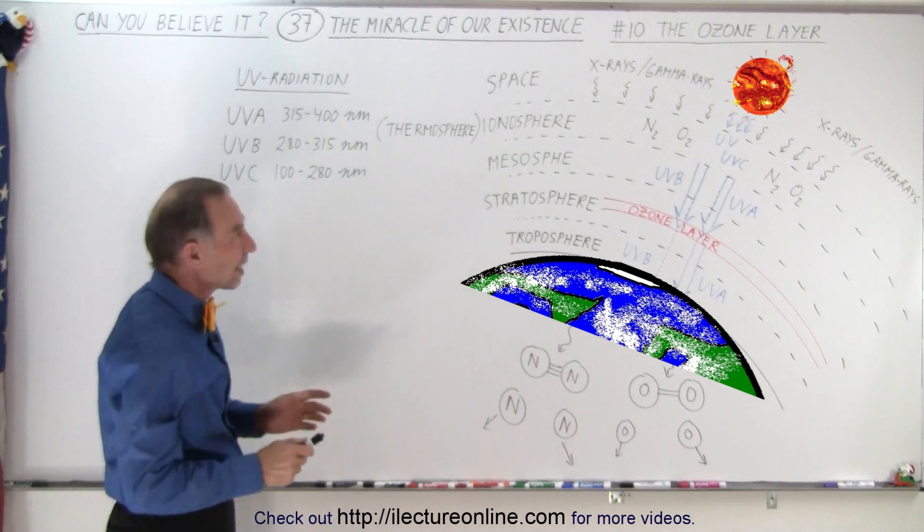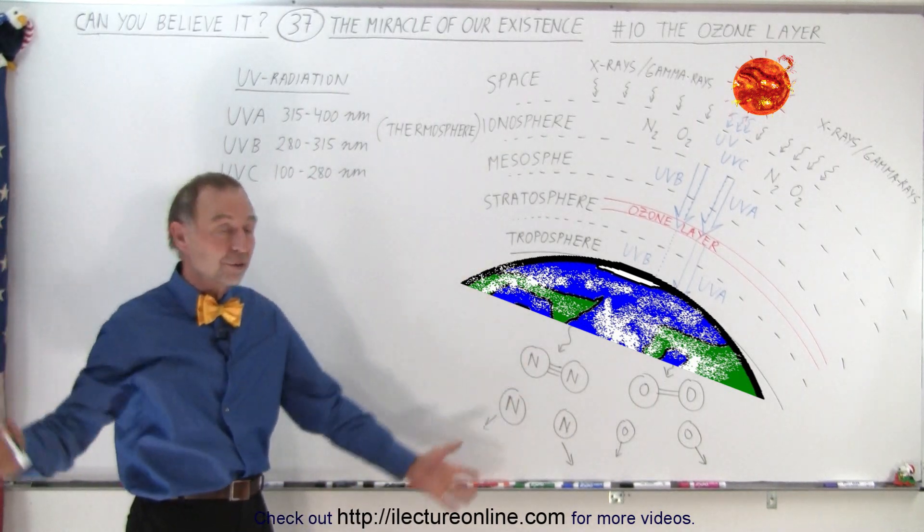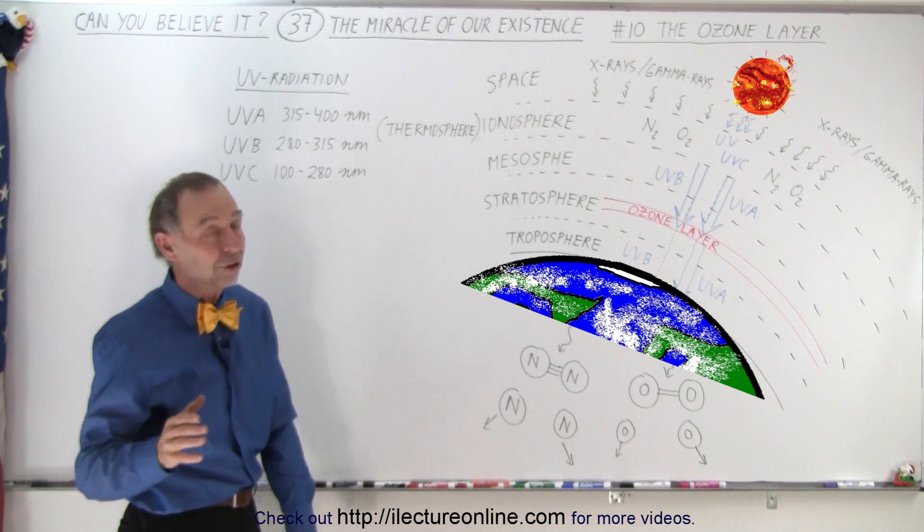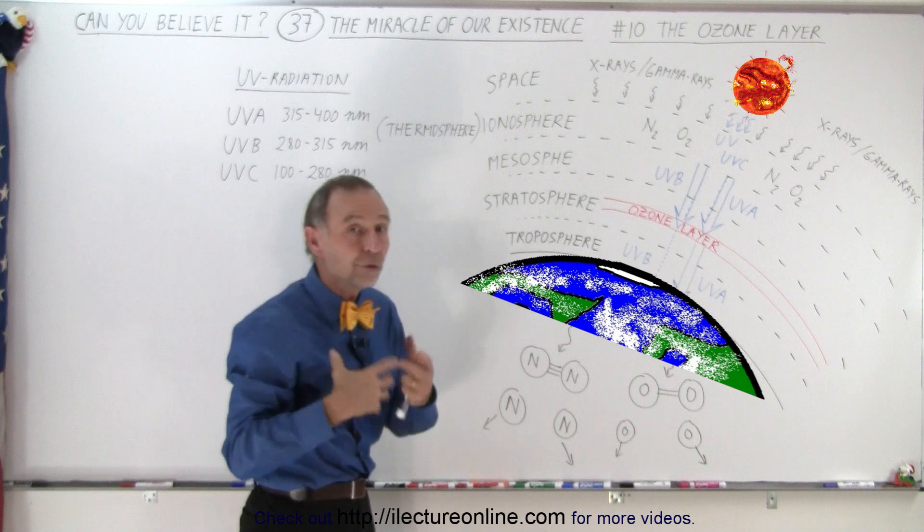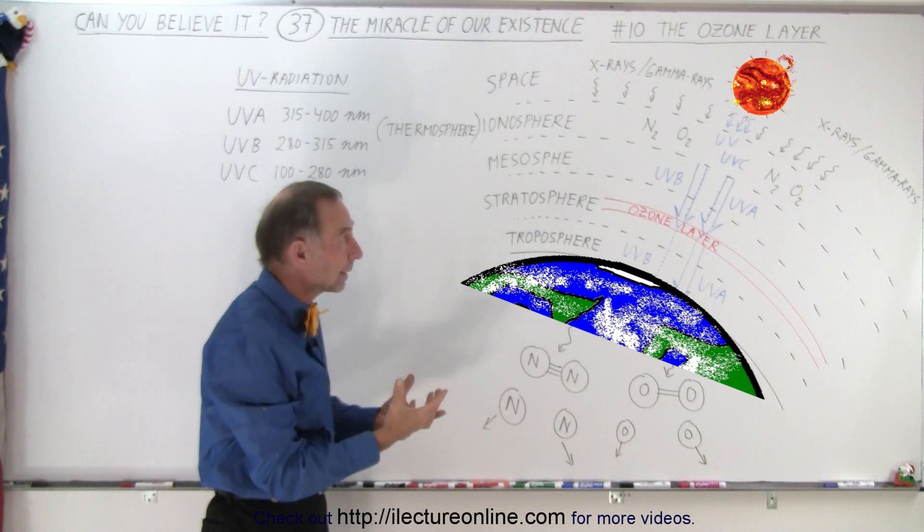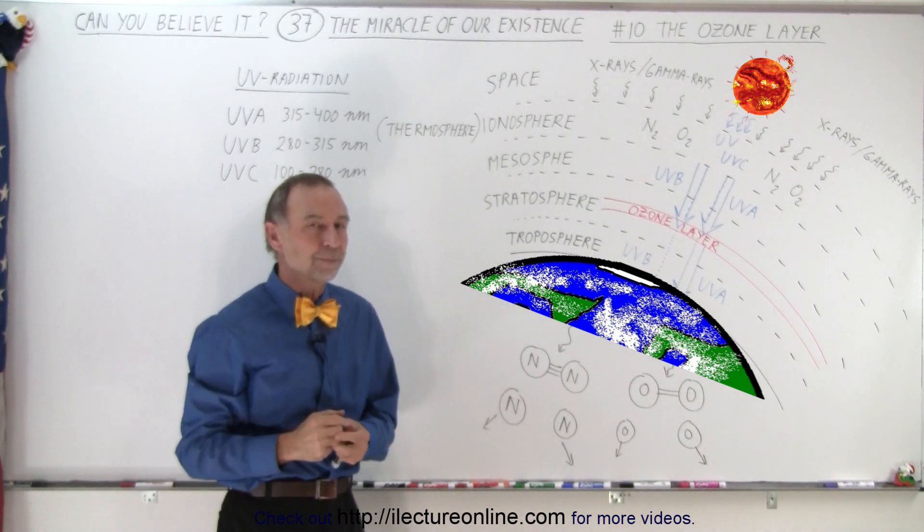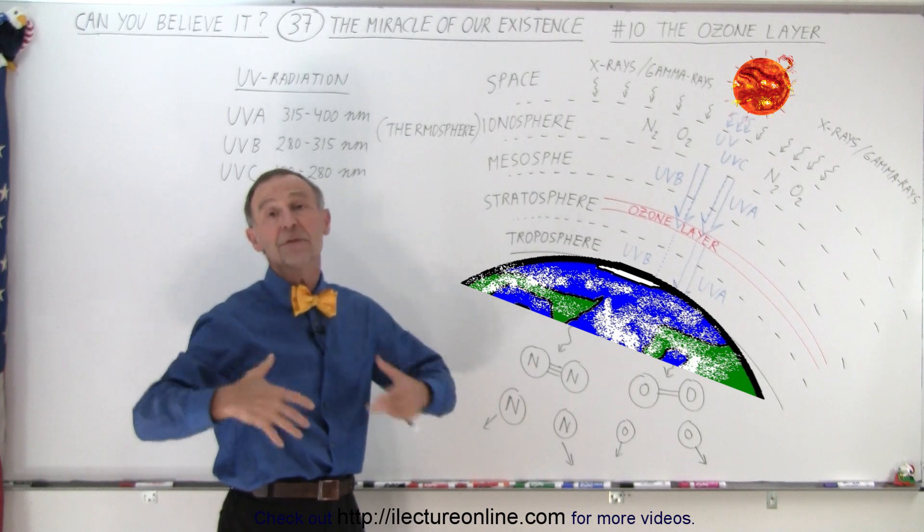But besides x-rays and gamma rays, which are all throughout space, there's also UV radiation, and one big source of UV radiation is our own sun. Our own sun puts out UV radiation, visible light, and infrared radiation.